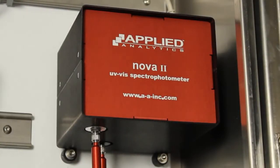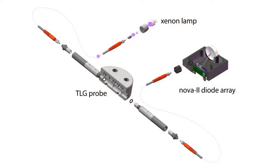The NOVA2 spectrometer sends and receives a pulse xenon light signal to and from the probe.